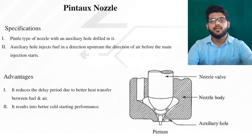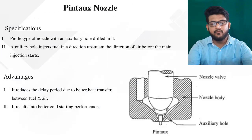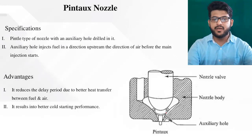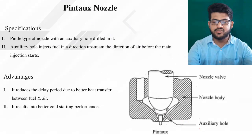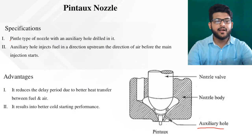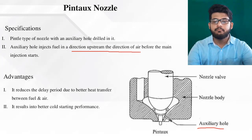The fourth nozzle is the pintaux nozzle, which is also used to address the dribbling effect. It is similar to the pintle nozzle but with an additional auxiliary hole. From this auxiliary hole, fuel can also exit into the combustion chamber. So the pintaux nozzle is essentially a pintle-type nozzle with an auxiliary hole drilled in it.